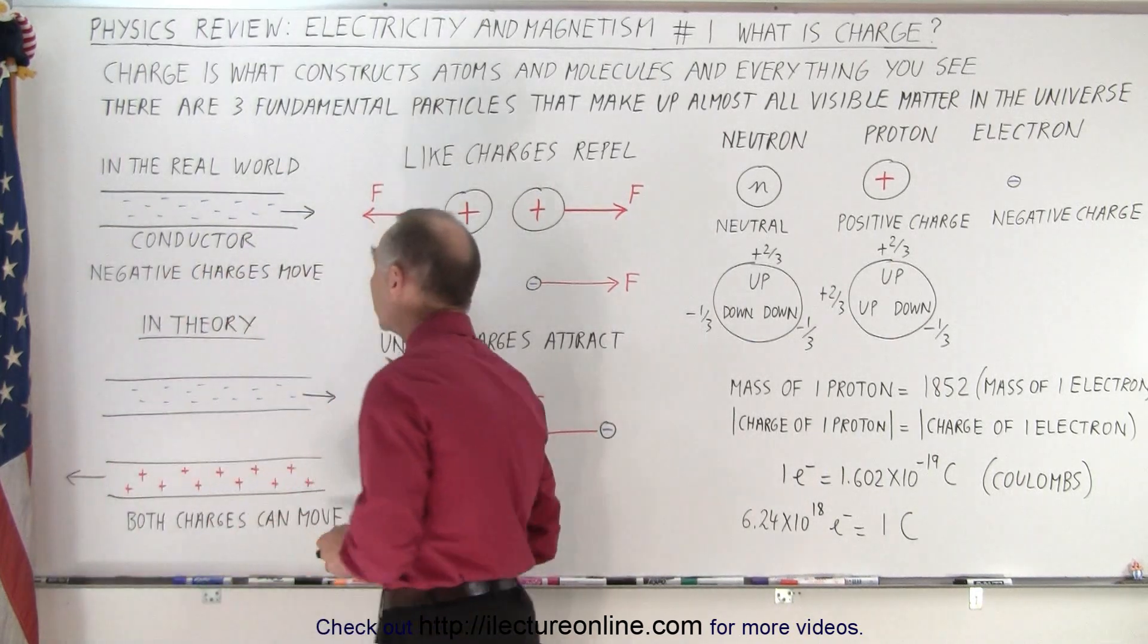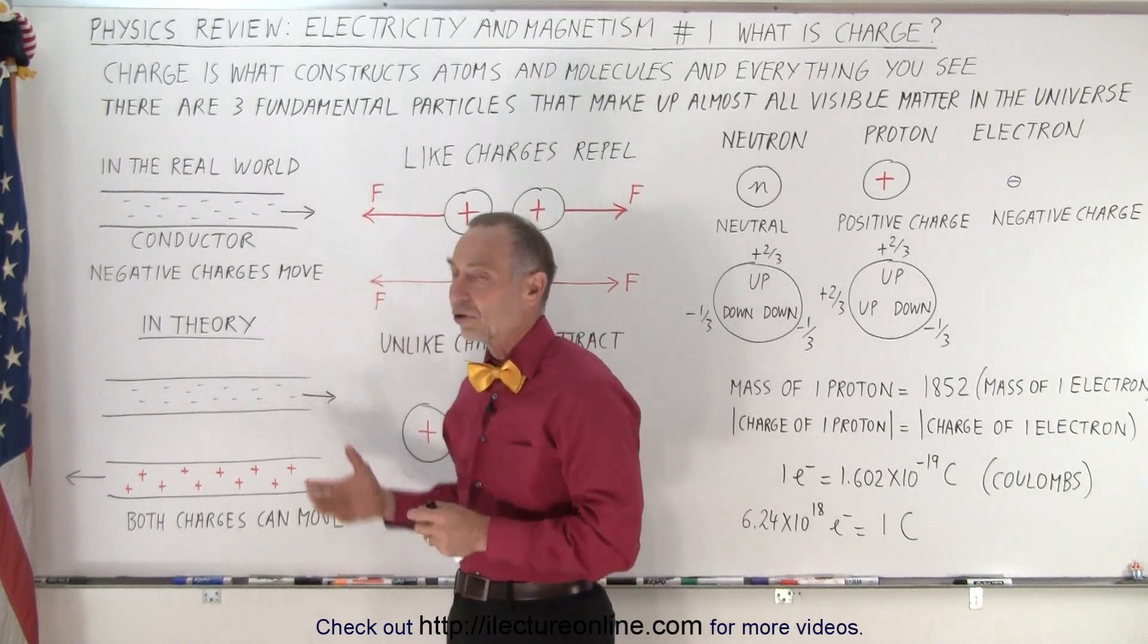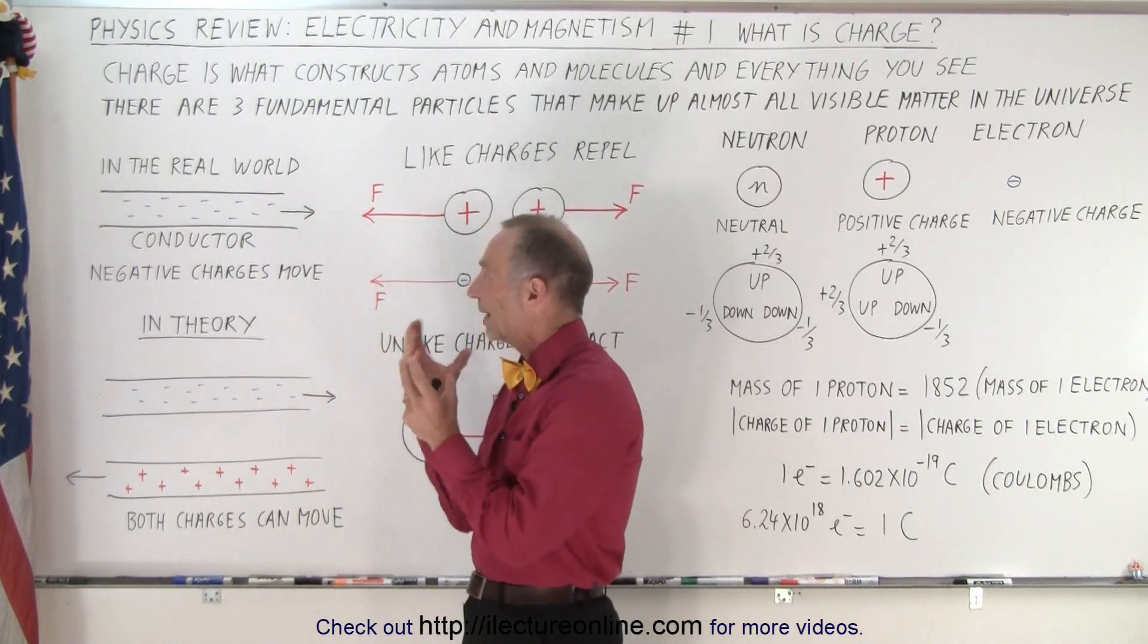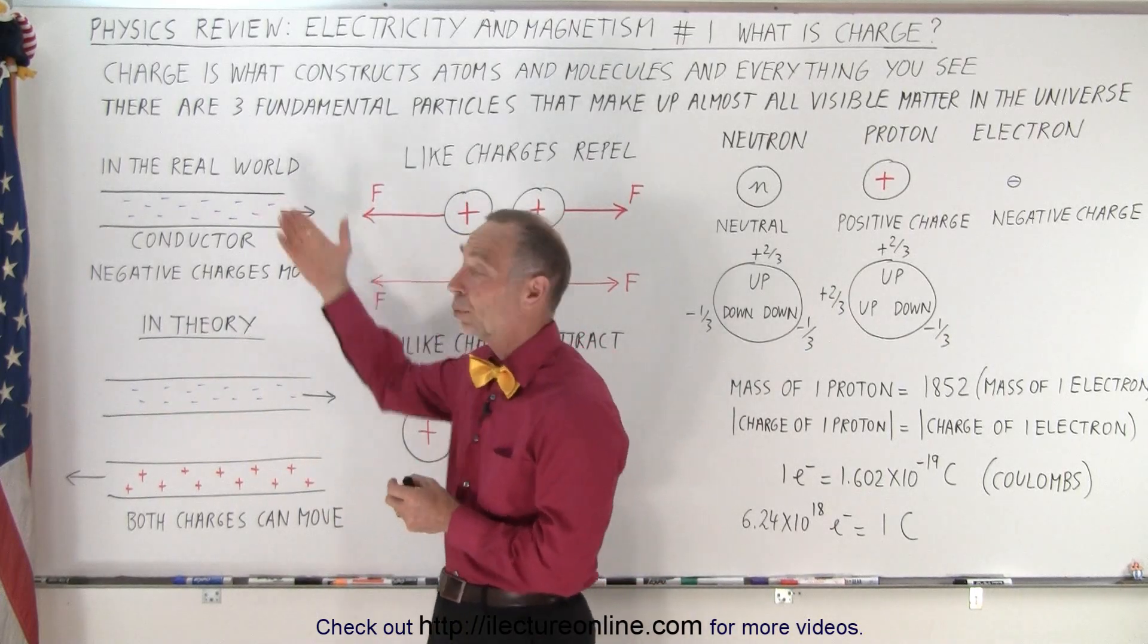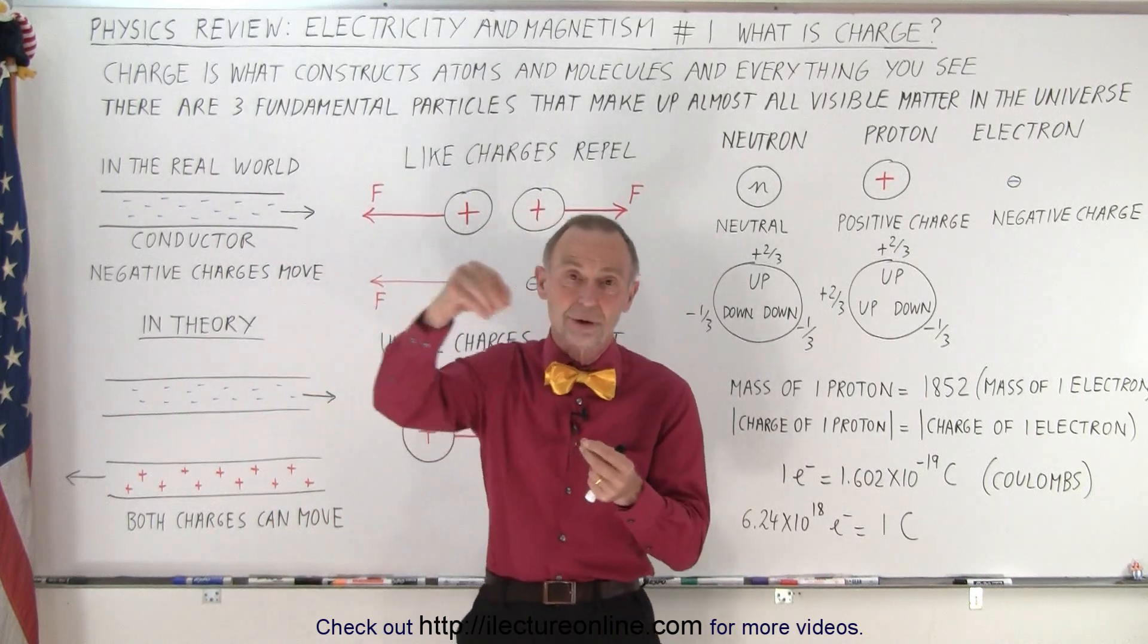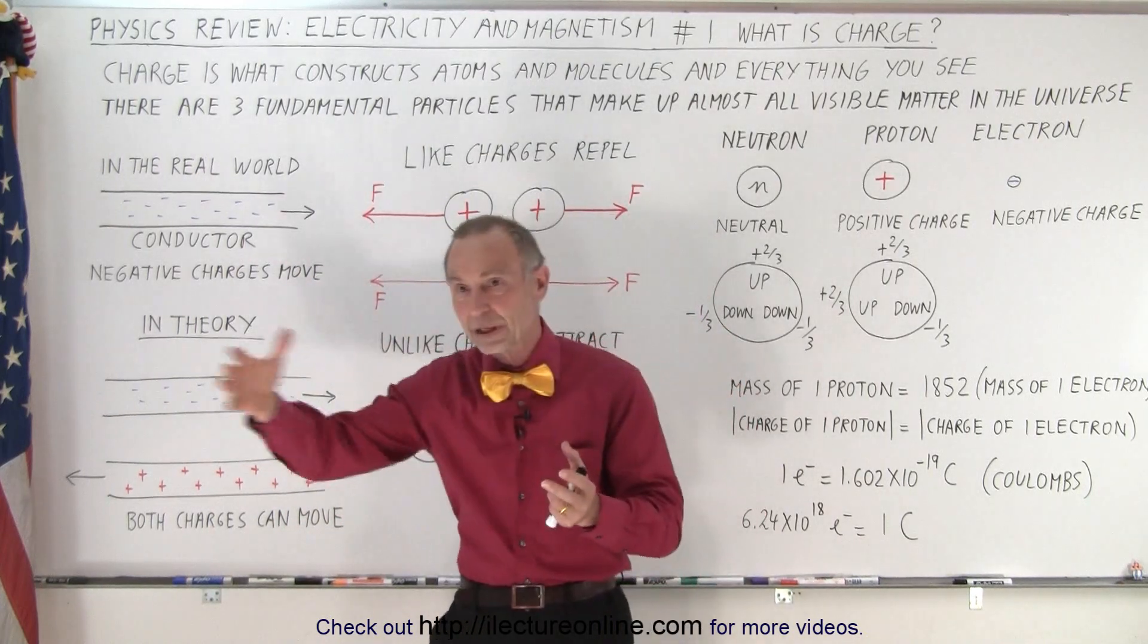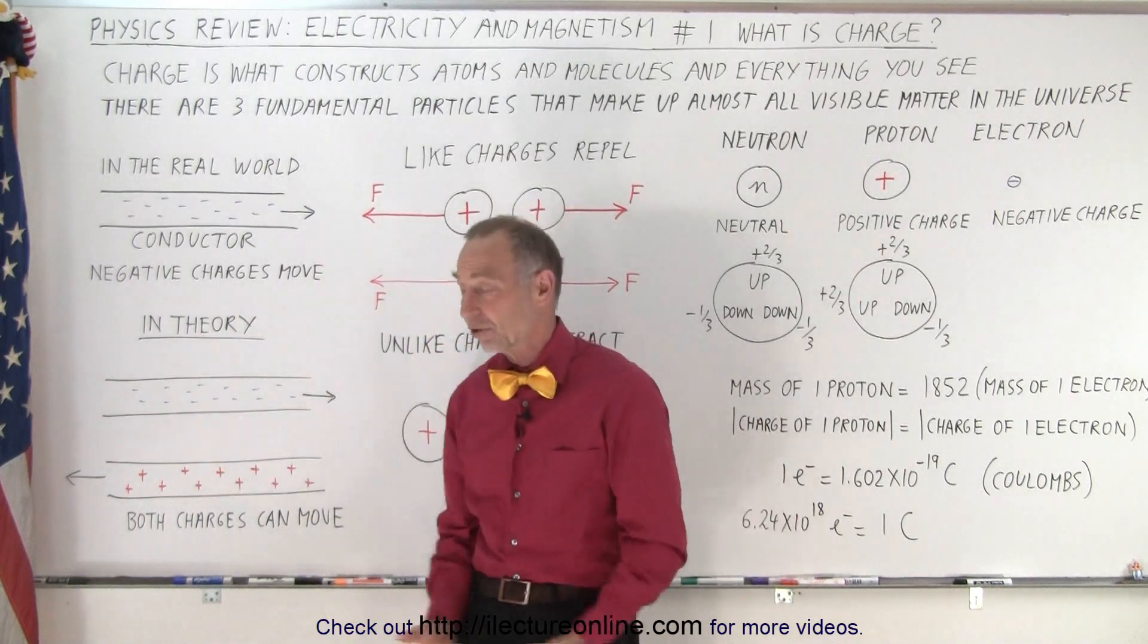Now here, we'll get into it in more detail later. Conductors are the things that are able to move charges along. Now it turns out in the real world, the charges that are moving along conductors are the negative charges, the electrons. Electrons are able to jump from atom to atom, and therefore when you have a movement of charges, it's typically the movement of negative charges.